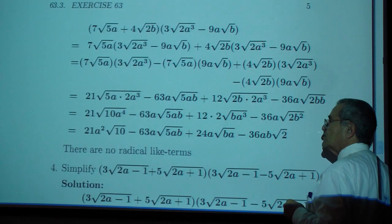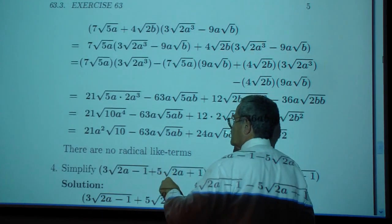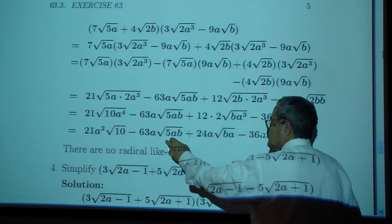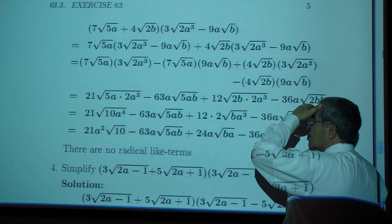It should leave you with twenty one a squared square root of ten. There's no other square root of ten. There's no other square root of five a b. There's a b a but there's an a in front.